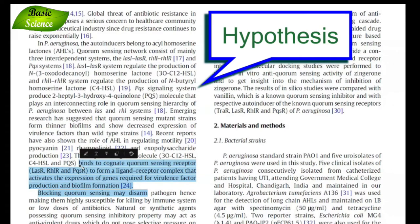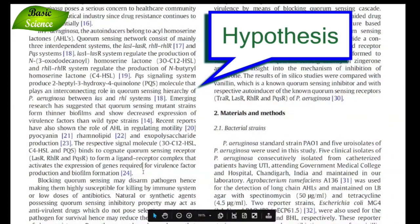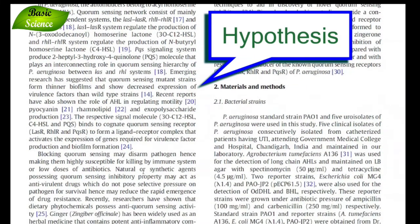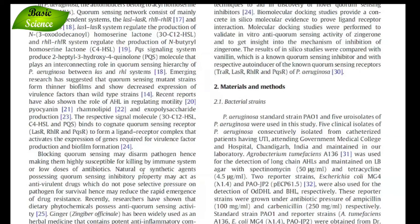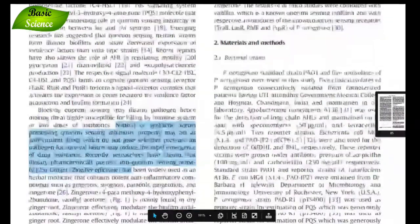In quorum sensing there are receptor molecules and ligand molecules. When they interact with each other, the signaling cycle completes and bacteria start producing virulence factors. My hypothesis is that the molecule targets that interaction, suppressing virulence. After mentioning the hypothesis, you can move on to the natural compounds, and then mention the specific molecule you are working on — this is how you construct the story.